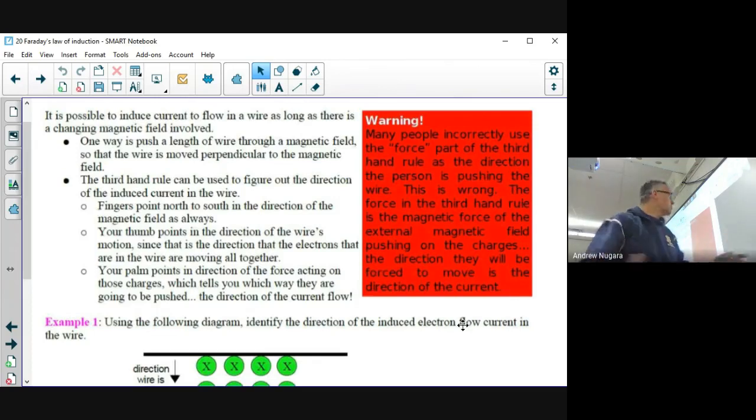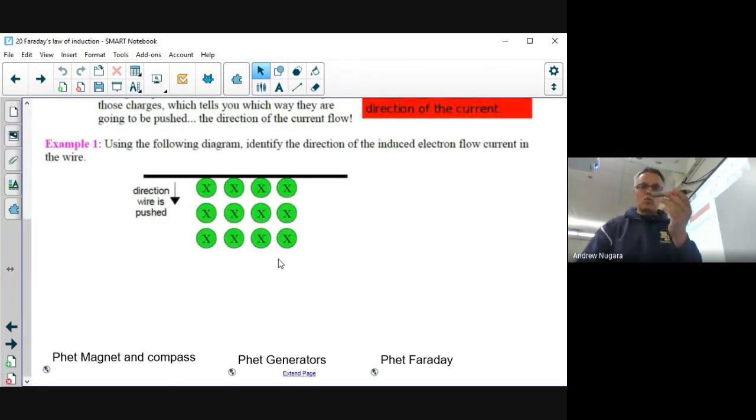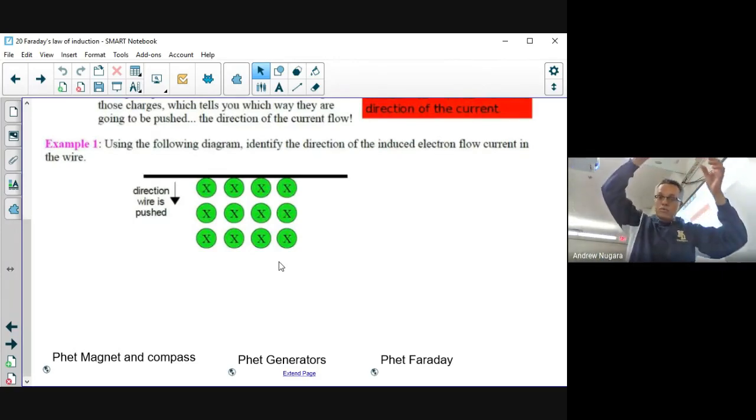As soon as you've got moving electrons, you've got electricity. So this is why Faraday's Law of induction is fairly important. Again, you've got a wire not attached to anything, there's nothing forcing those electrons through, but if you move it through the magnetic field they will move.